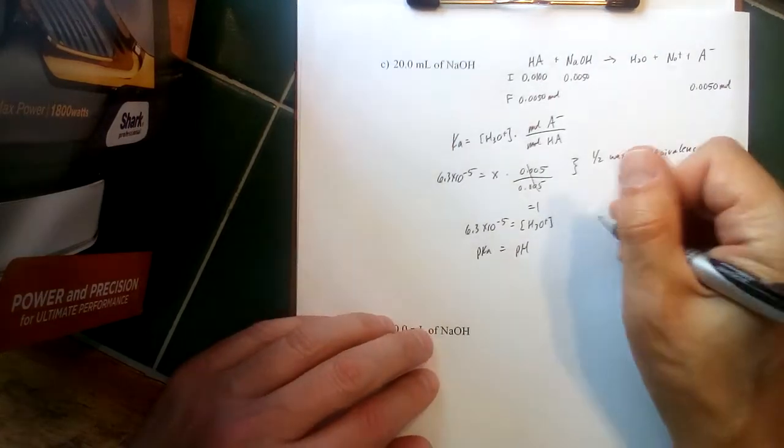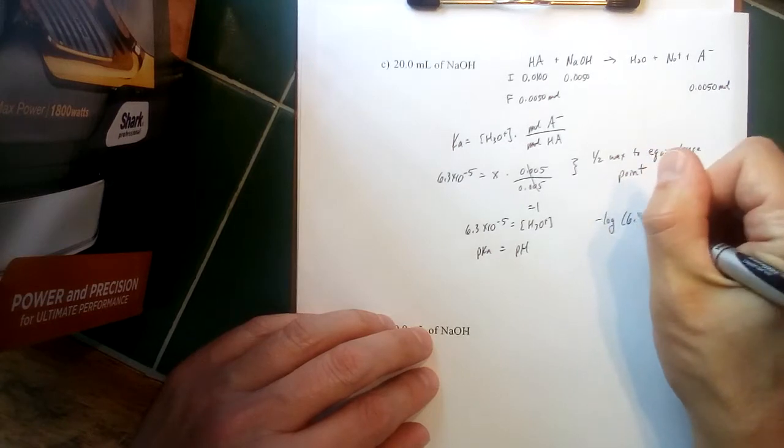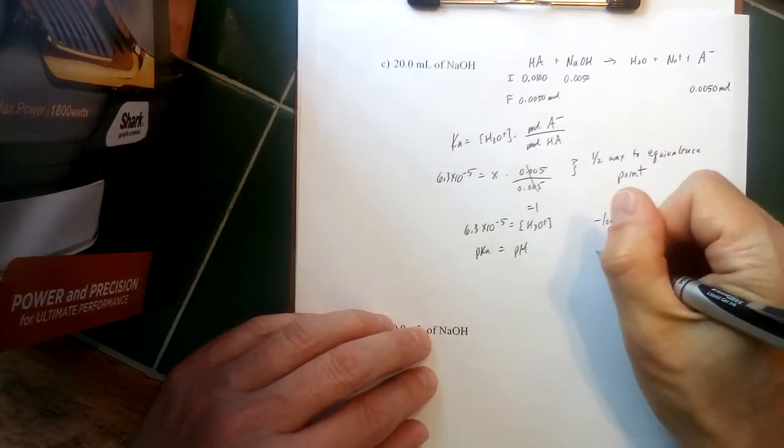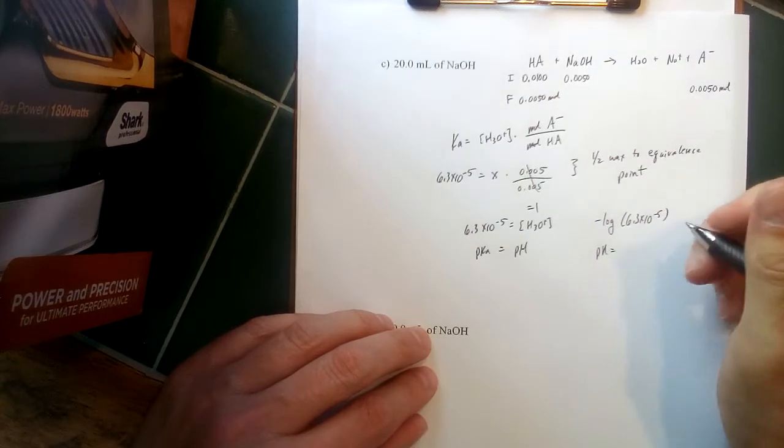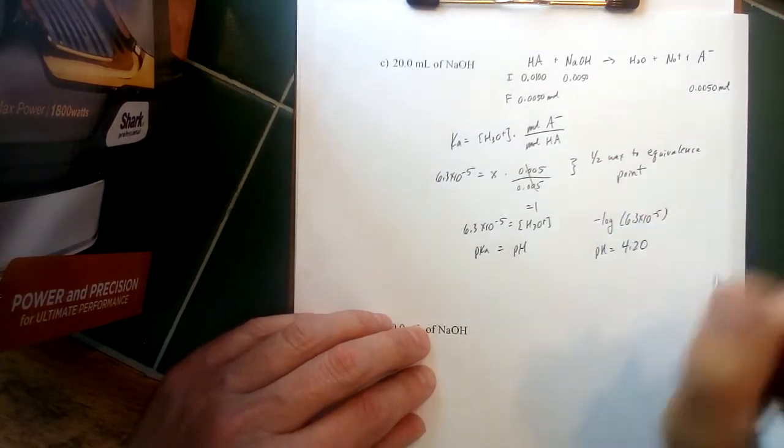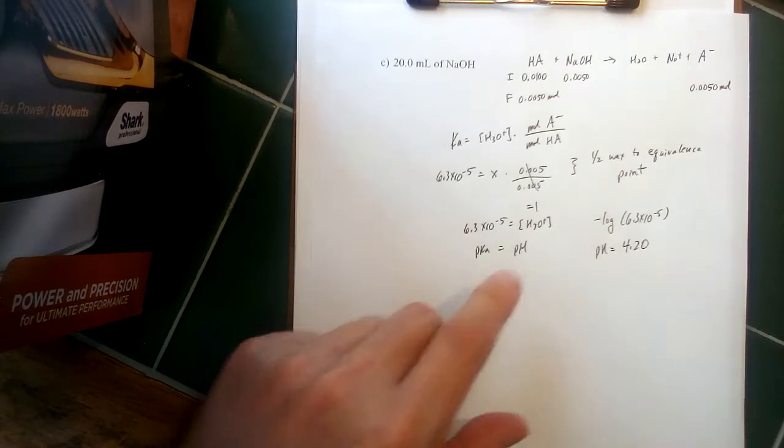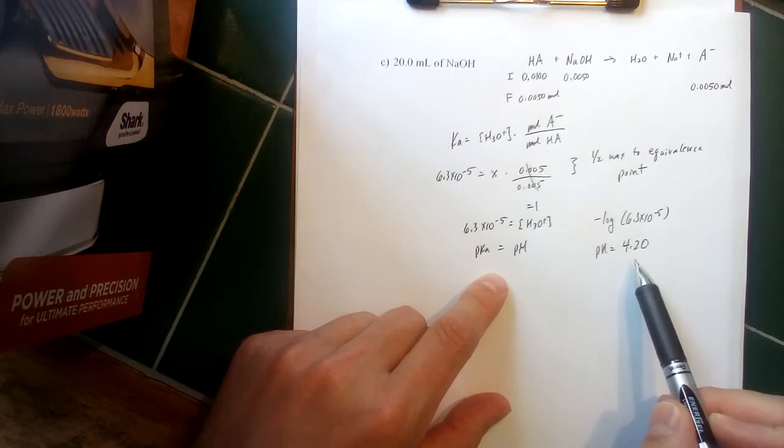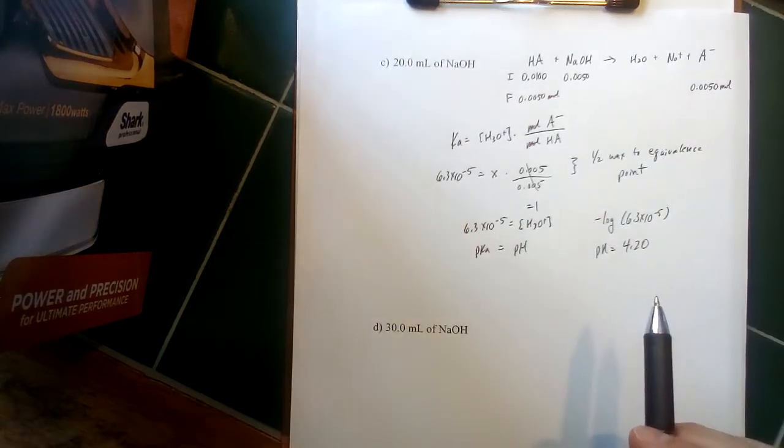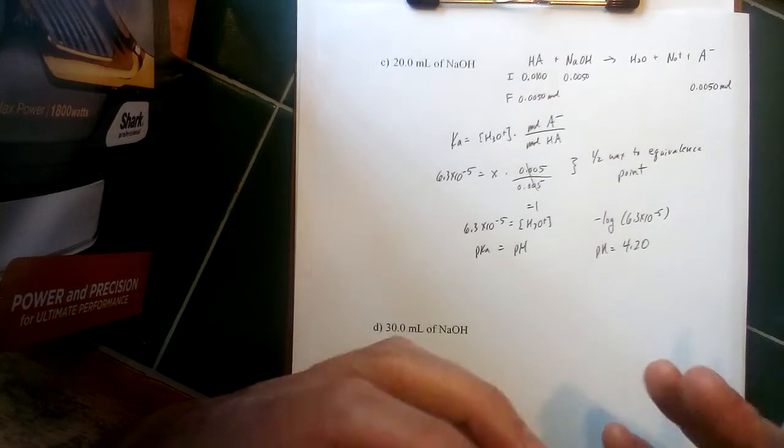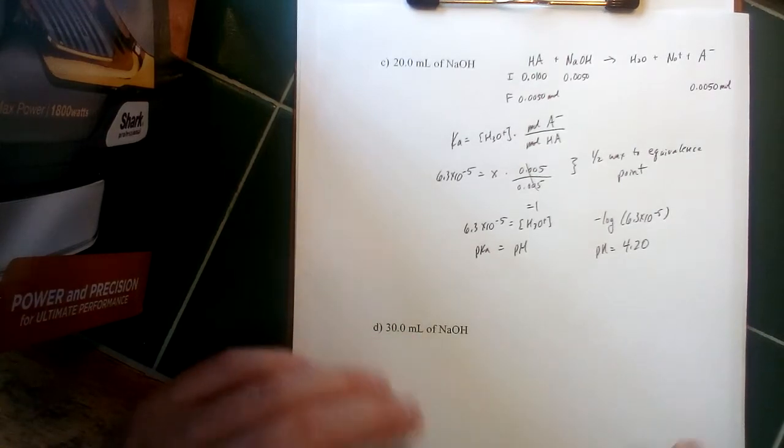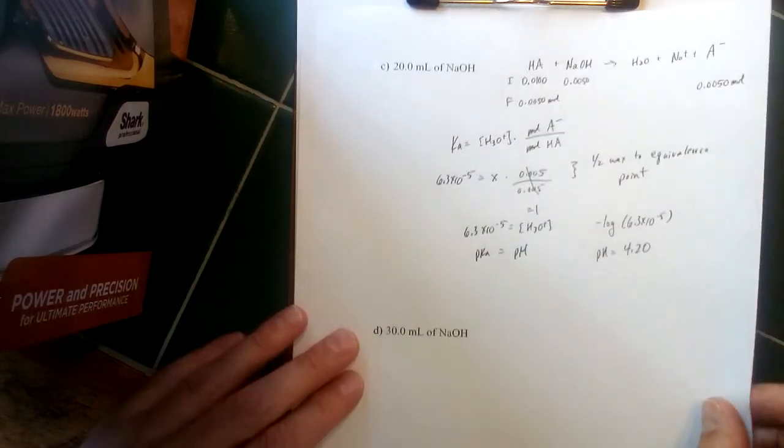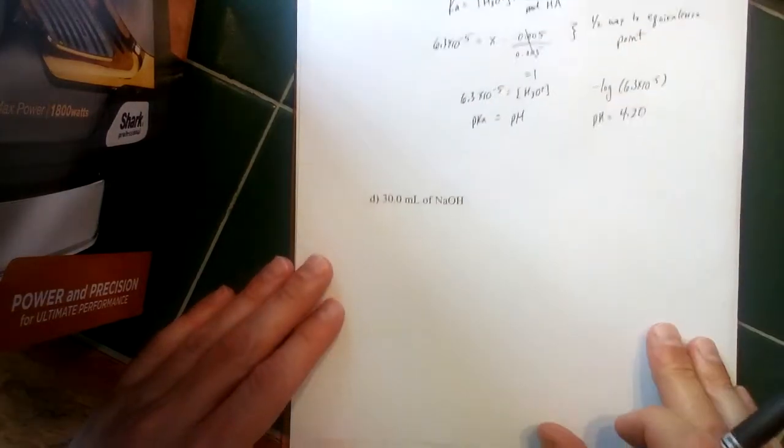So taking the negative log of 6.3 times 10 to the minus fifth, we get the pH at this point in the titration is equal to 4.20. Now looking back to parts A and B, we started at 2.40 for part A, we added some base to part B—it went up to 3.72—add a little more base, goes up to 4.20. So it's still going in the right direction, going in a fairly small increment. That's what buffers do—they mediate how much the pH changes. So that answer does make sense.